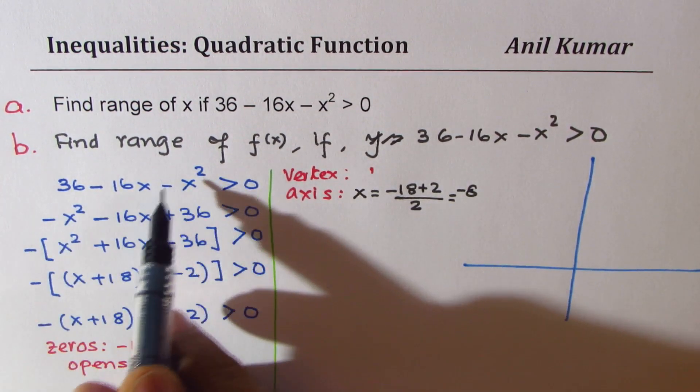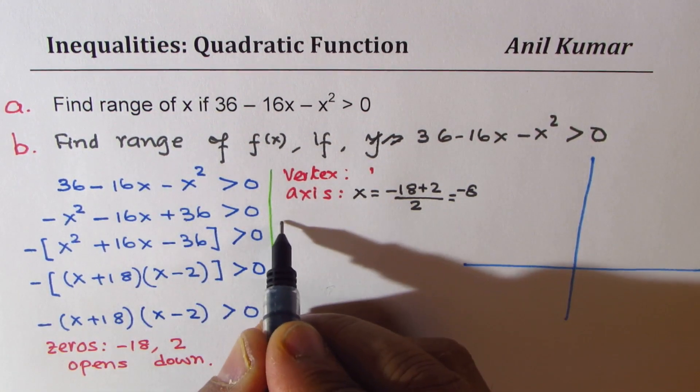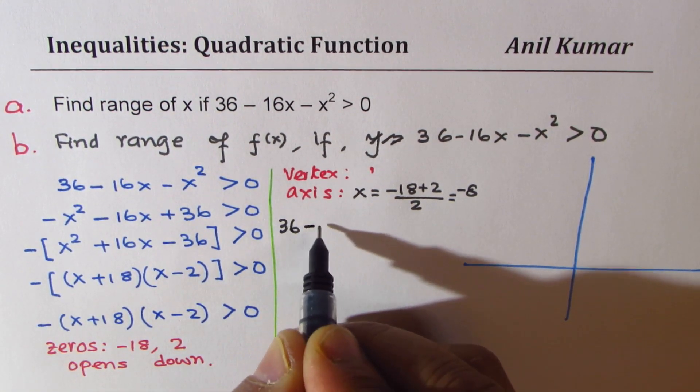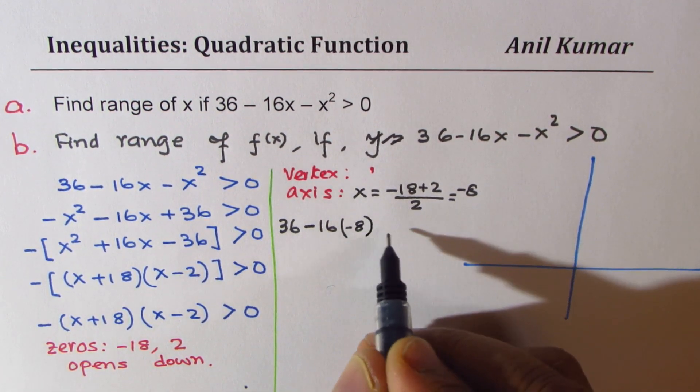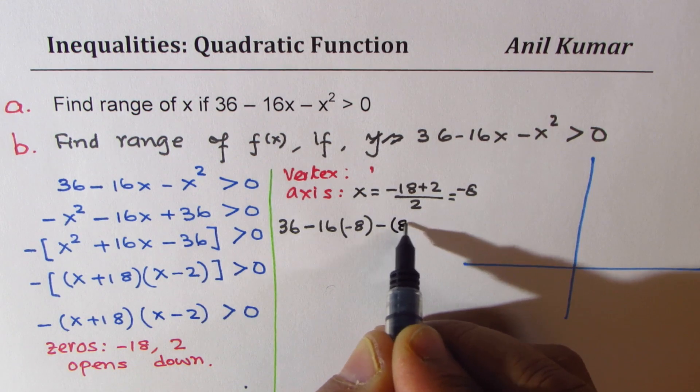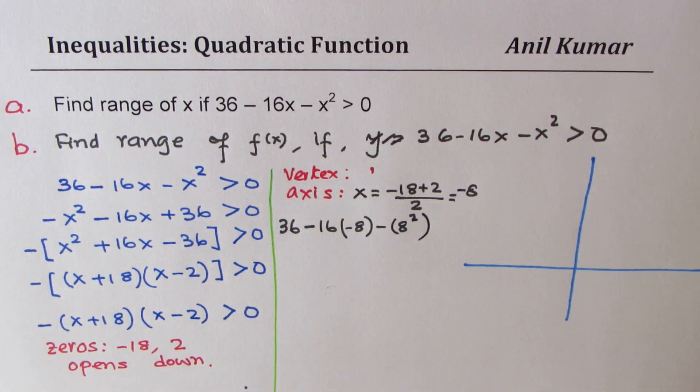So the value of this function at minus 8 will give us the y value. So we can substitute minus 8 here, we get 36 minus 16 times minus 8 minus 8 squared. Let's calculate this value.